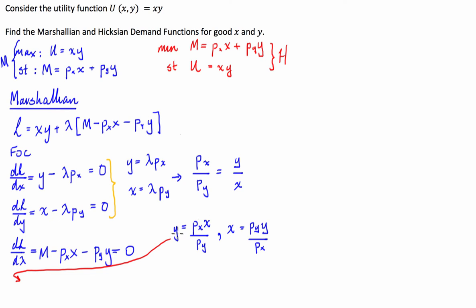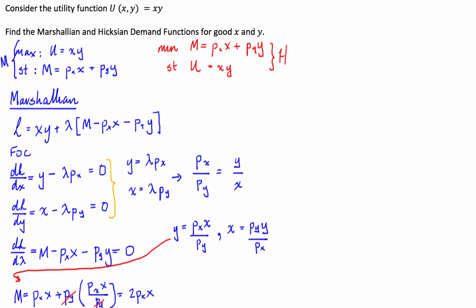We substitute into our income constraint starting with Y. So M equals PX·X plus PY times (PX·X / PY). The PY terms cancel, and collecting like terms we get M equals 2·PX·X. Therefore X equals M divided by 2·PX.